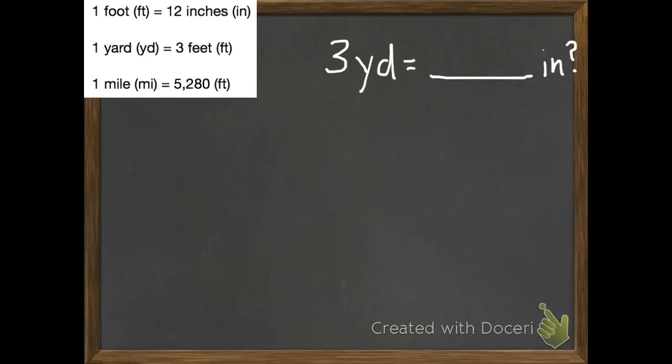For our second example, we're going to change 3 yards into inches. As I look at my facts, I don't have one that has both yards and inches. This one has yards, that one has inches. But we don't have a fact that goes from yards to inches. So we're going to have to use two of our facts to figure out a new fact.